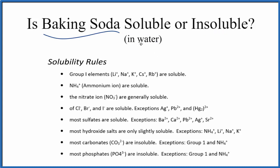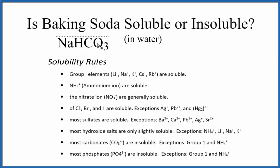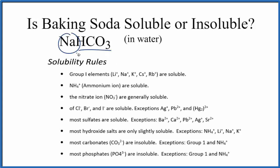First off, we need to know the chemical formula for baking soda. Baking soda is NaHCO3. This is called sodium bicarbonate, sometimes called sodium hydrogen carbonate.